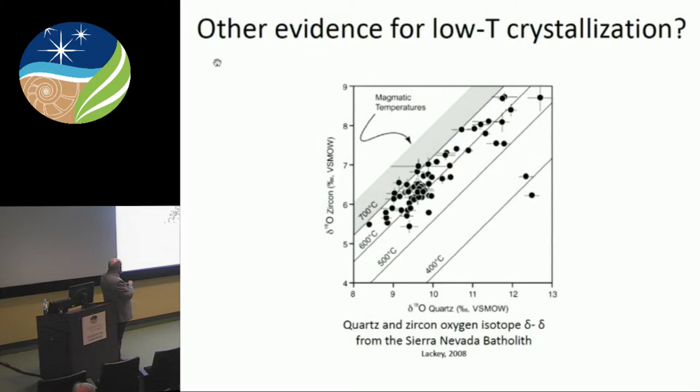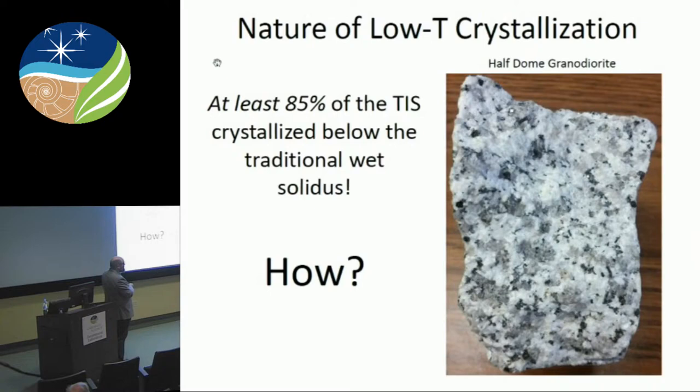Oxygen isotope delta-delta plots for quartz versus zircons — this is Jade Star Lackey's work on these same rocks — give temperatures of 600, maybe 500°C. Either way, below the solidus. To summarize the results so far: quartz and the feldspars, which make up over 85% of these rocks, crystallize 200°C below where we thought possible. The next obvious question is: how the heck does that happen?